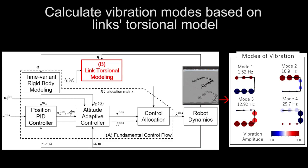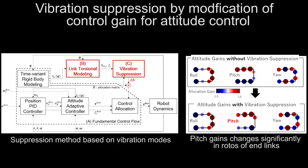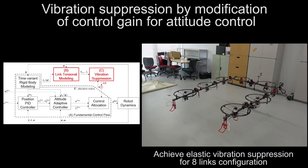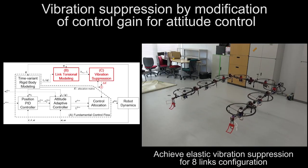We then extend an existing control framework. We first calculate the vibration modes of the torsional motion — the right figure shows the first four modes for the vibrated robot shape. We then develop an optimization-based method which uses the redundancy of control input to modify the control allocation gain matrix for vibration suppression.